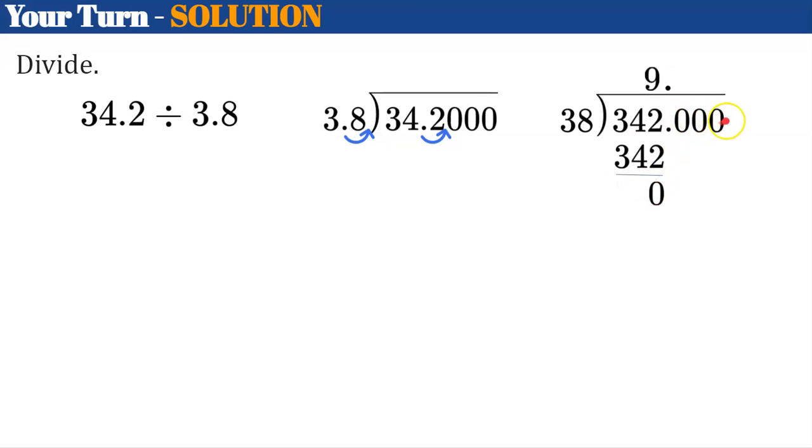I already have my remainder of 0. So even though I had all these digits here, all these zeros waiting to go, I don't need them. And it's okay. So my solution, or my quotient, is 9.